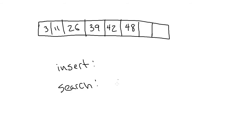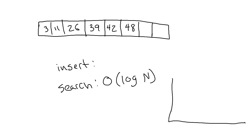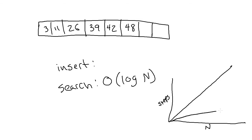We'll analyze binary search in more detail in a couple of weeks when we talk about searching and sorting algorithms, but for now it's O(log n). Big O of log n is quite good — if you have a linear algorithm it might grow steadily, but a logarithmic curve grows very, very slowly. Even for large values of n, it's going up very slowly, so O(log n) is actually quite good.